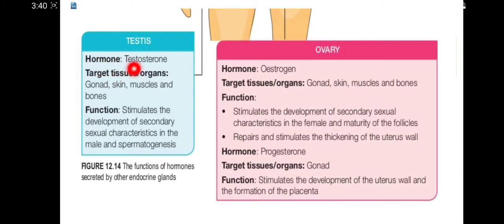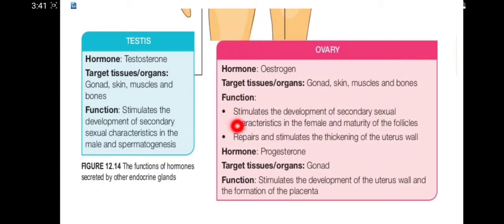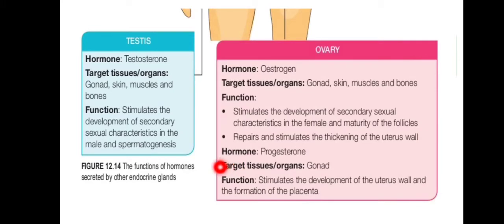The testes secrete testosterone, which targets the gonad, skin, muscles, and bones. Its function is to stimulate the development of secondary sexual characteristics in the male and stimulate spermatogenesis. The ovary secretes estrogen, targeting the gonad, skin, muscles, and bones, to stimulate the development of secondary sexual characteristics in females and maturity of follicles, and to repair and stimulate the thickening of the uterus wall. The ovary also secretes progesterone, which stimulates the development of the uterus wall and the formation of the placenta. Note that gonad refers to the ovary and testes themselves.